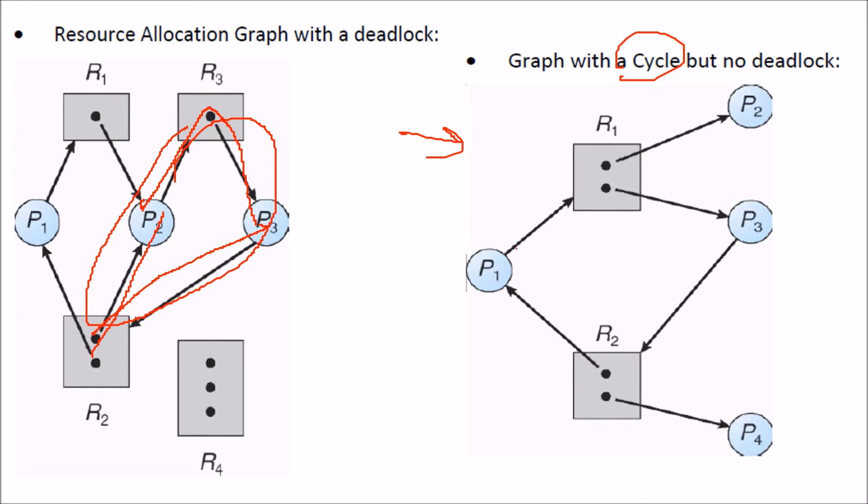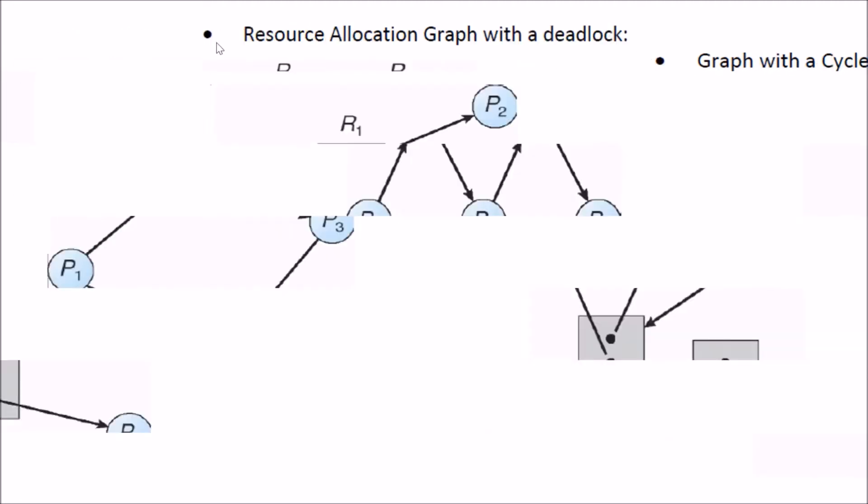If you observe it very closely, P1 is, because there are multiple instances. P1 is expecting R1, R1 is held by P3, P3 is expecting or wanting R2, but R2 is held by P1. But the system is not in deadlock, because we have more than one instances of R, that is the resources.